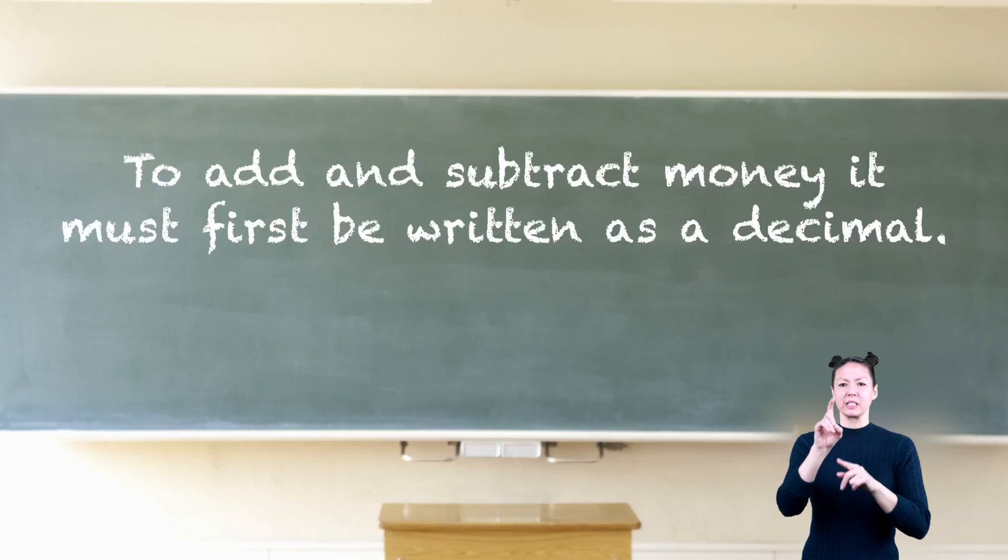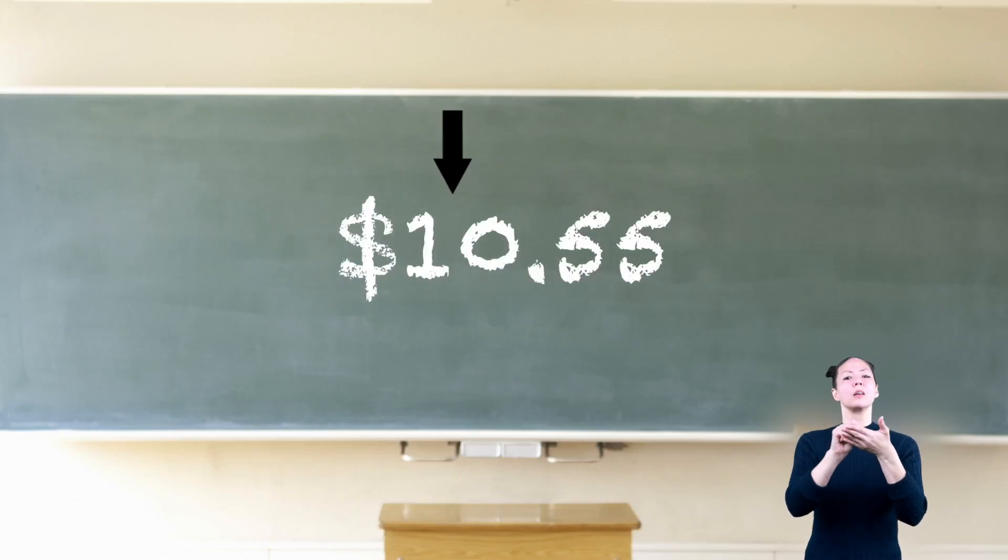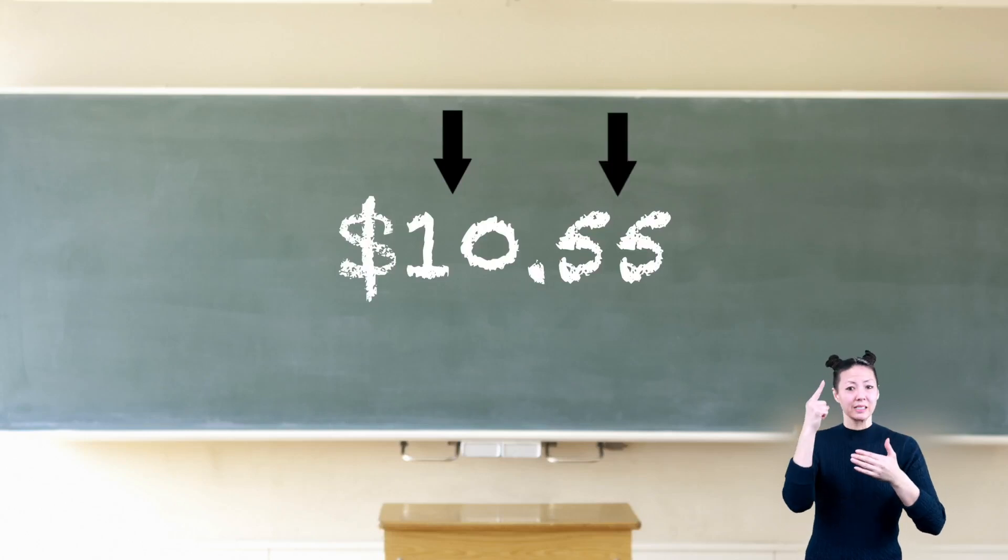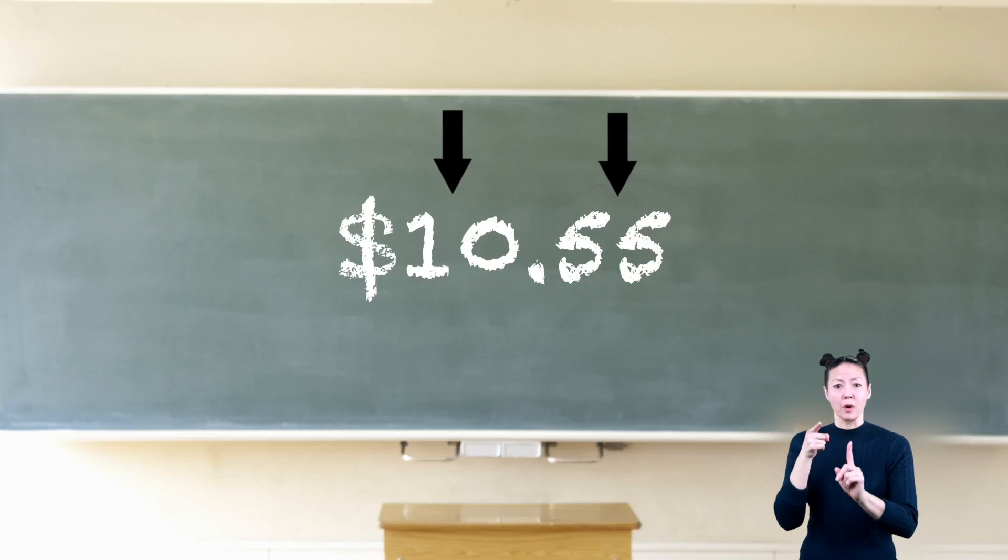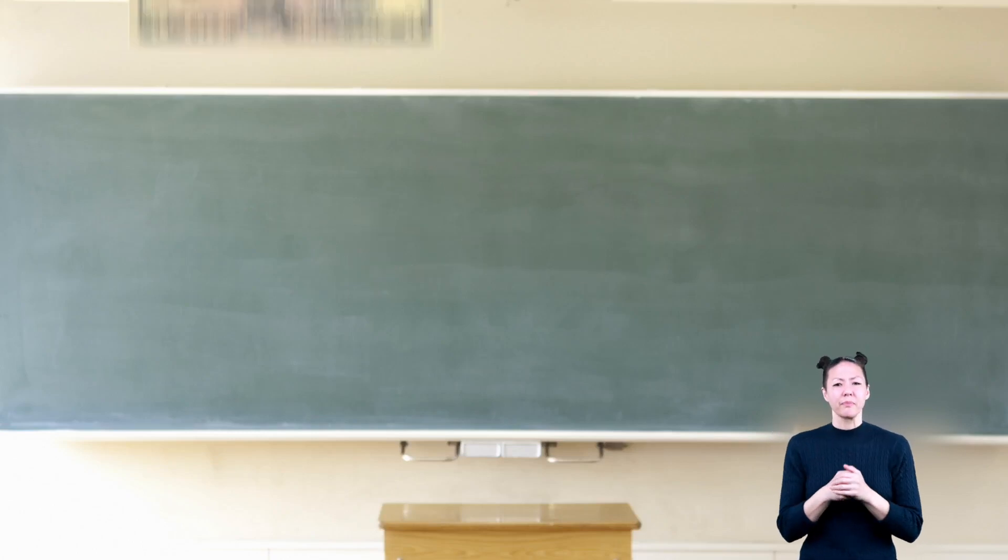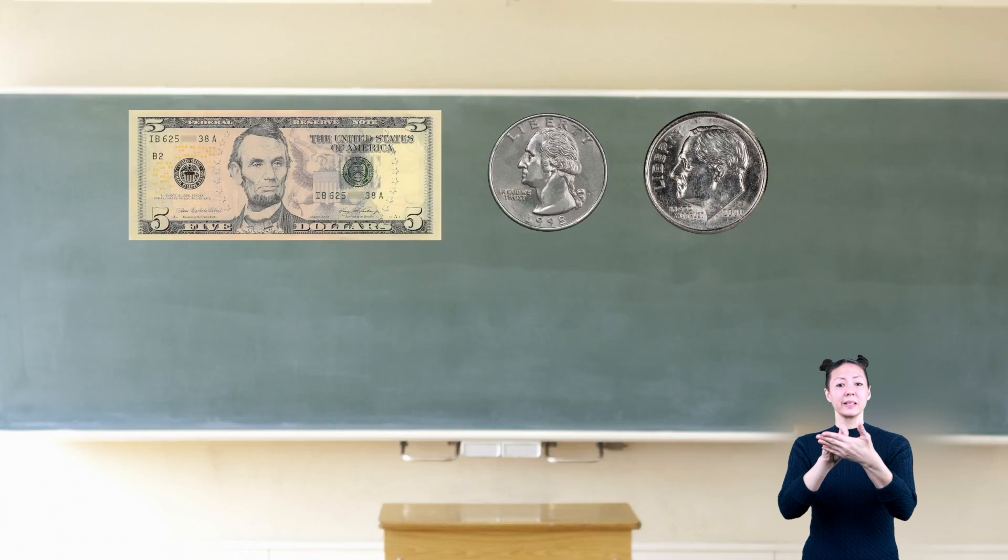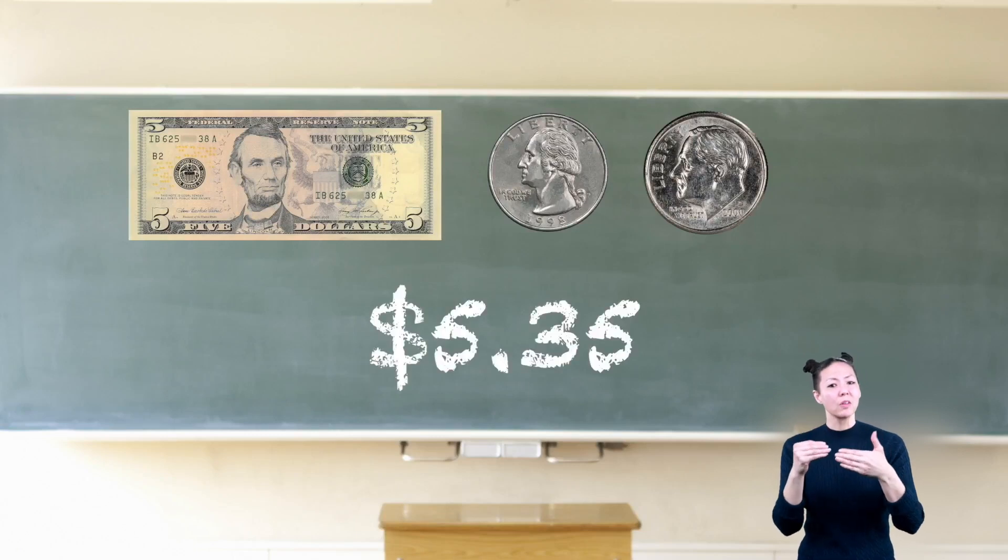To add and subtract money, the amount must first be written as a decimal. The number of dollars will be written as the whole number to the left of the decimal, and the cents will be written as a fraction of a dollar to the right of the decimal point.